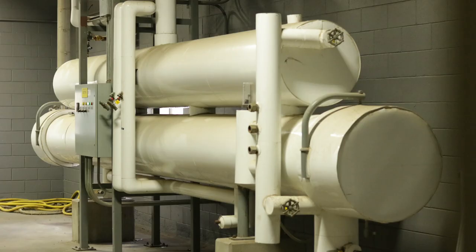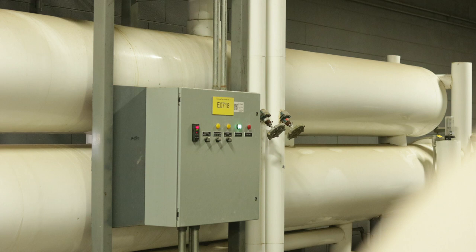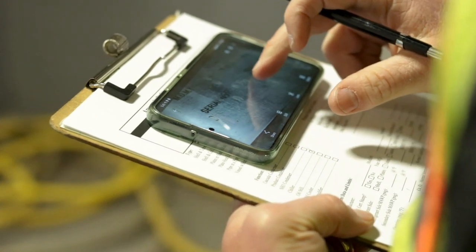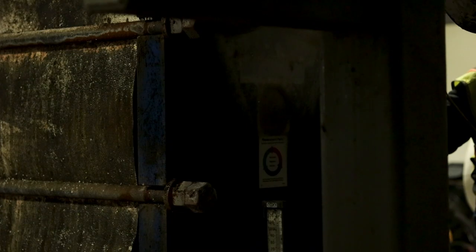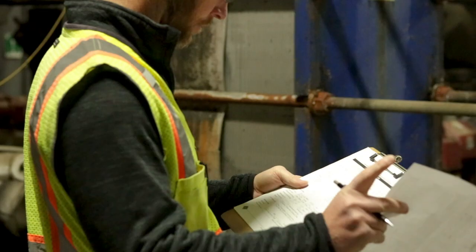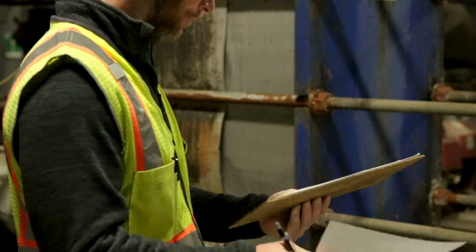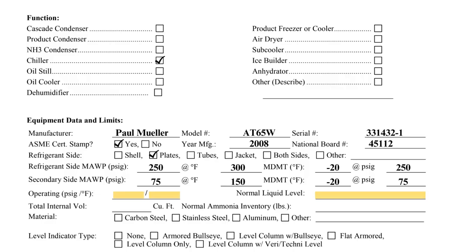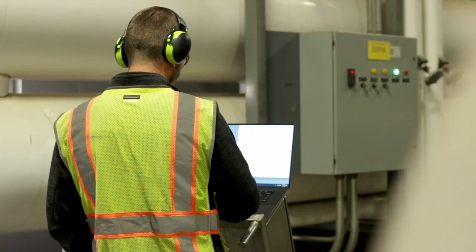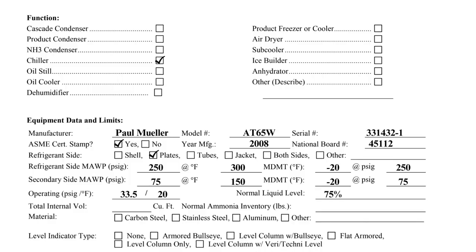In this shell and tube heat exchanger, the MAWP and MDMT can be obtained directly from the nameplate. Because the plate and frame nameplate is partially covered by ice, we use the U1A to find some of the required information. The operating pressure, temperature, and normal liquid level will vary from heat exchanger to heat exchanger and will require operator input or design information about the system.